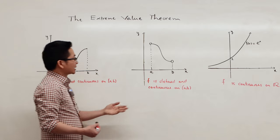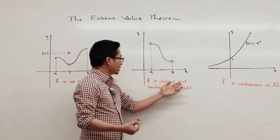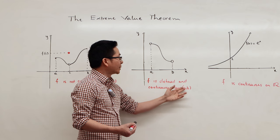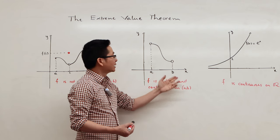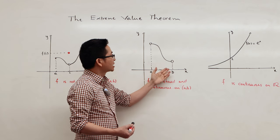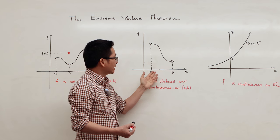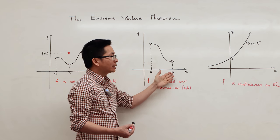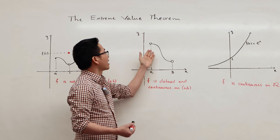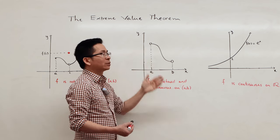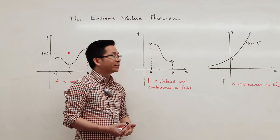In the second example, f is defined and continuous on an open interval ab. Here, f doesn't have an absolute minimum in the interval ab, and f doesn't have an absolute maximum in the interval ab.